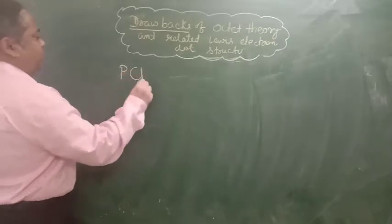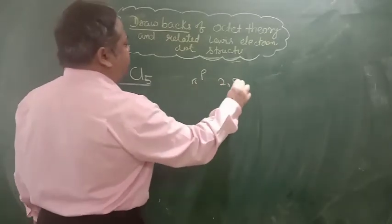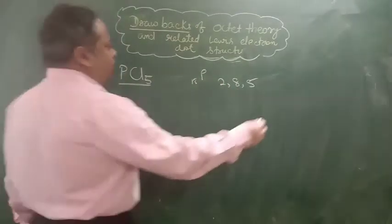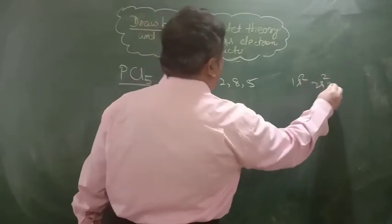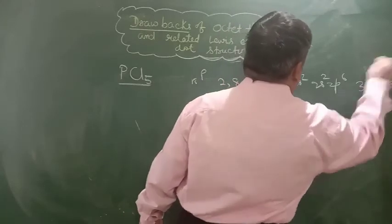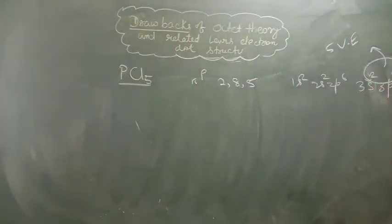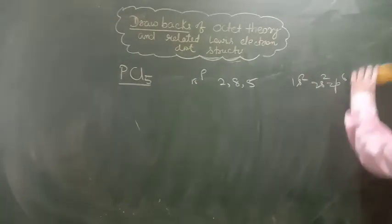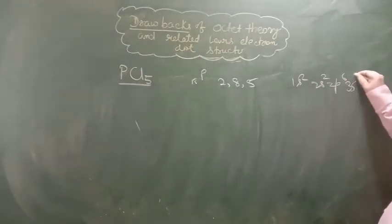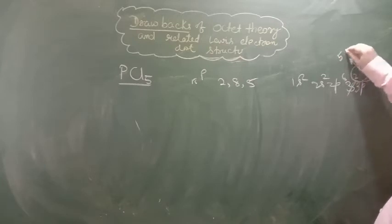Now let us take the example of PCl5. Phosphorus 15, 2, 8, 5. Or in that way 1s2, 2s2, 2p6, 3s2, 3p3. It has 5 valence electrons. See, it has 5 valence electrons.